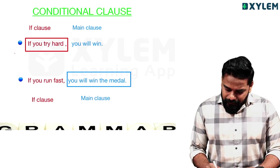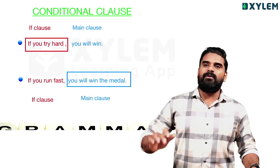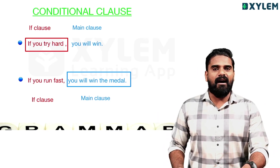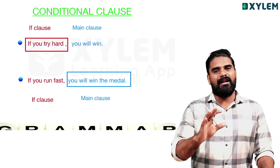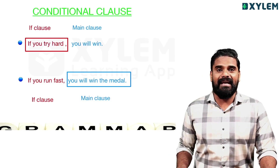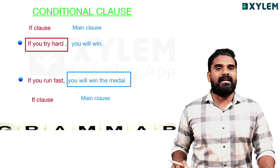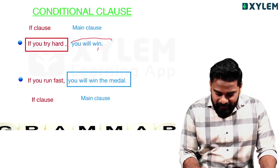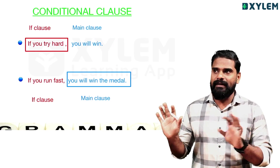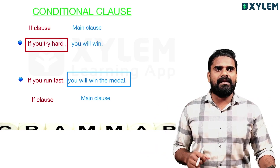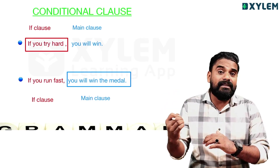For example: 'If you try hard, you will win.' In this sentence, 'if you try hard' is called the if clause, and 'you will win' is called the main clause.